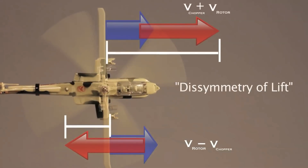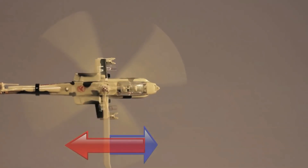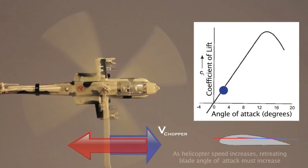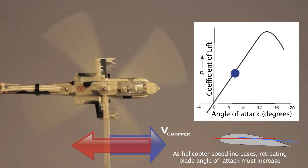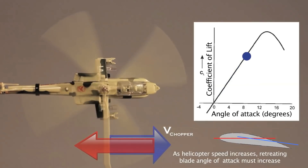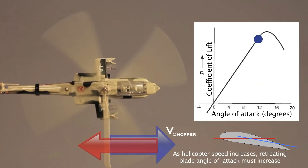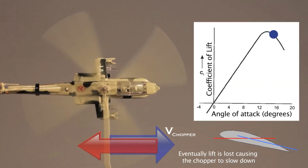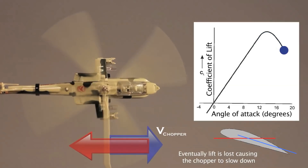This creates something called dissymmetry of lift. And to counteract this, the rotor on the retreating side is given more pitch to produce more lift. This works up to a point, but if the helicopter goes too fast, the pitch becomes too great and you lose lift, creating what's called a retreating blade stall.